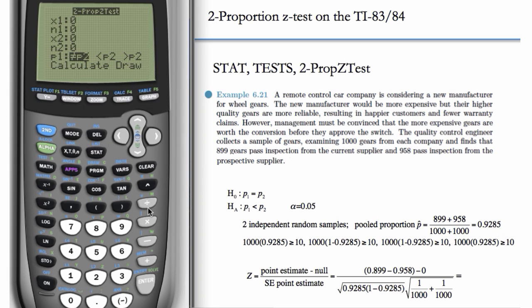x1 is 899, n1 is the sample size of 1000, x2 is 958. Remember, x1 and x2 have to be integers. Of course, n1 and n2 have to be integers as well. So, n2 is also 1000.